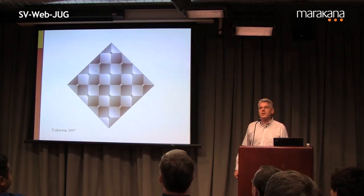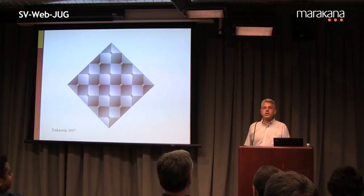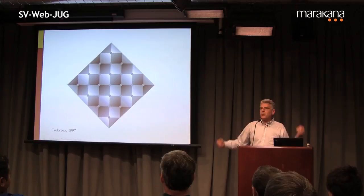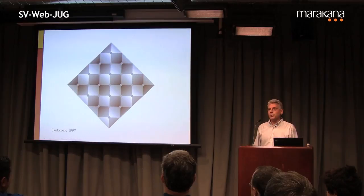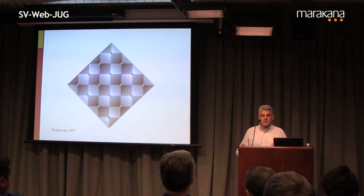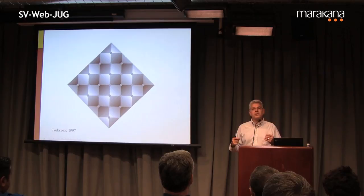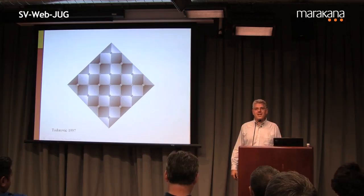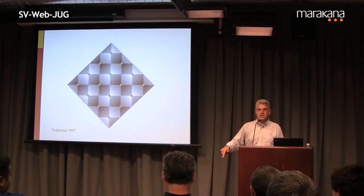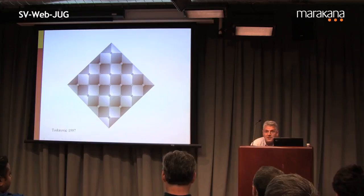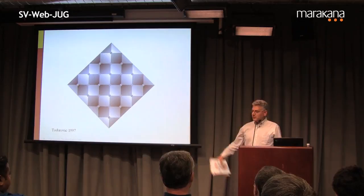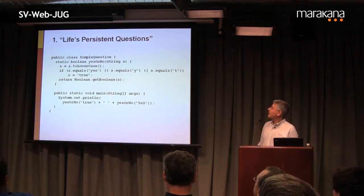Let's do a couple of code puzzles. Here's how it works: I'm going to show you a small program that fits on a slide, walk you through what it appears to do, and then you'll tell me what it actually does by show of hands — multiple choice, four options. Each puzzler has a moral illustrating some coding trap. You do actually have to vote, and we have prizes. Keep track on the honor system.